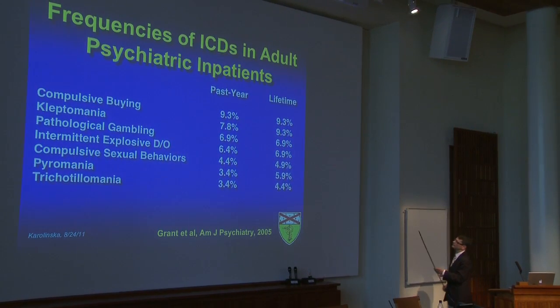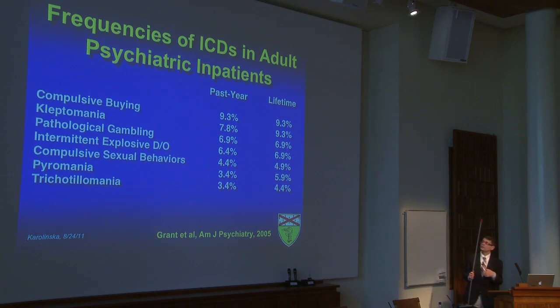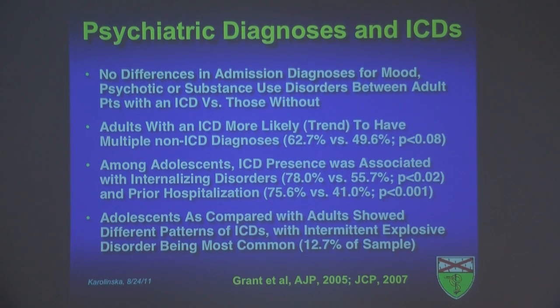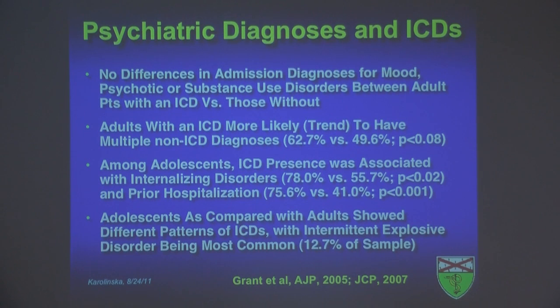Pathological gambling prevalence in the inpatient sample was significantly higher than general adult population estimates, which typically range around 0.5 to 1%. The past year estimates frequently approximated lifetime estimates, suggesting these were active problems. When we looked at identifying differences between individuals with and without impulse control disorders, there were no differences in admission diagnoses for mood, psychotic, or substance use disorders, suggesting that these disorders are comorbid with a broad range of psychiatric conditions. Adults with an impulse control disorder were more likely at a trend level to have multiple non-impulse control disorder diagnoses — more frequent comorbidities.